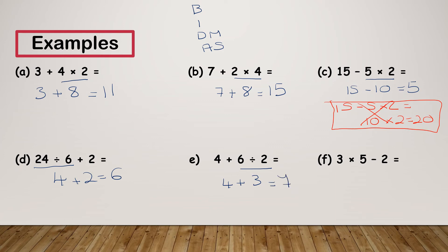And last but not least for these ones: 3 times 5 minus 2. Multiplication comes before subtraction, so I'm doing my 3 times 5, which is 15, take away 2, which gives me 13. It's really important that I remember to do things in the correct order, but also that I don't change the order of my sum — I need to make sure my sum is still in the right order.